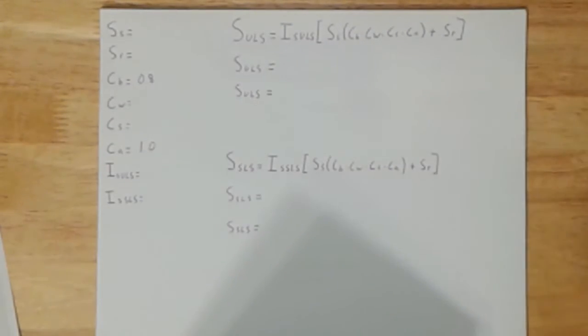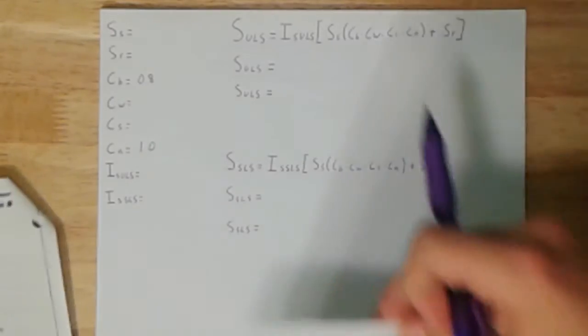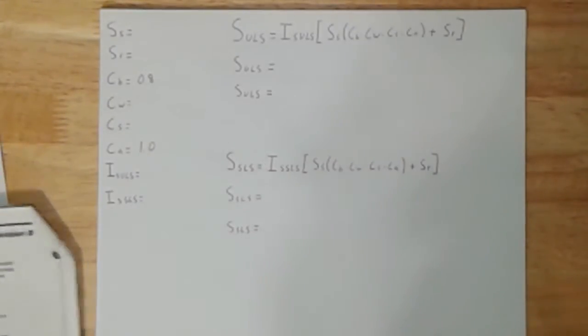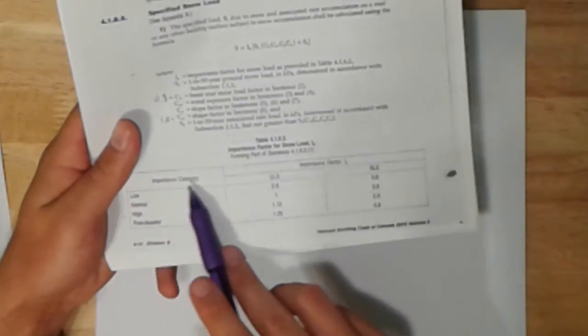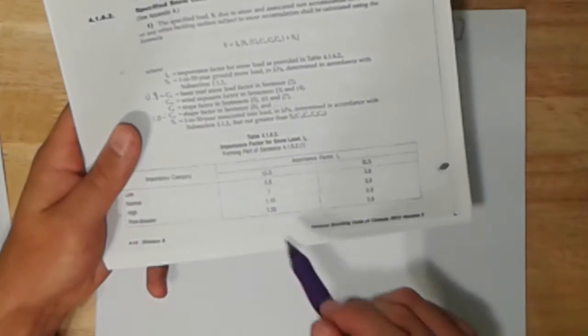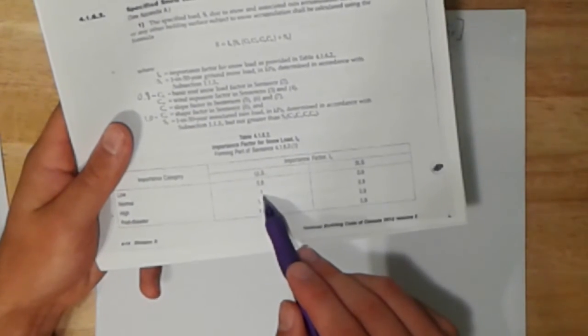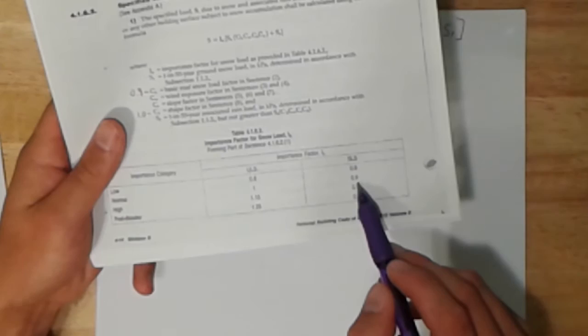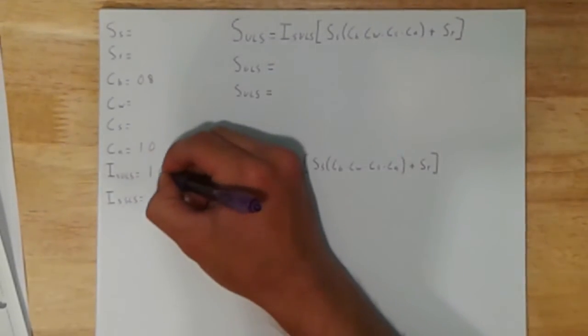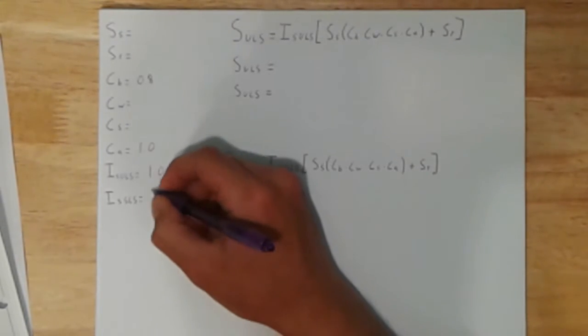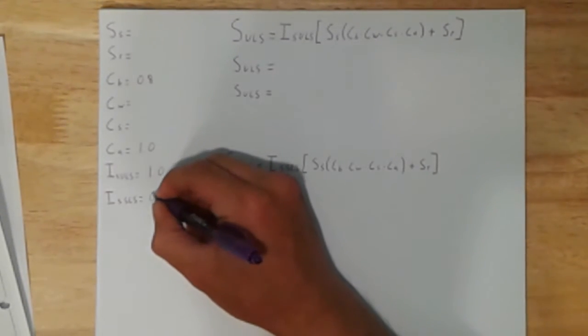So now if we go back to our question, the building is categorized as normal importance. So since it's normal importance, we're going to go back to our building code. We're going to go to this importance category, normal importance. ULS is going to be 1 and SLS is going to be 0.9.